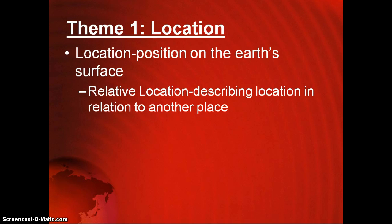Relative location is describing a location in relation to another place. For example, a friend tells you that she is going to Taiwan next week and you reply, 'Where the heck is Taiwan?' You are asking for its location. If your friend tells you that Taiwan is off the southeast coast of China, she is giving you its relative location — where Taiwan is in relation to China.